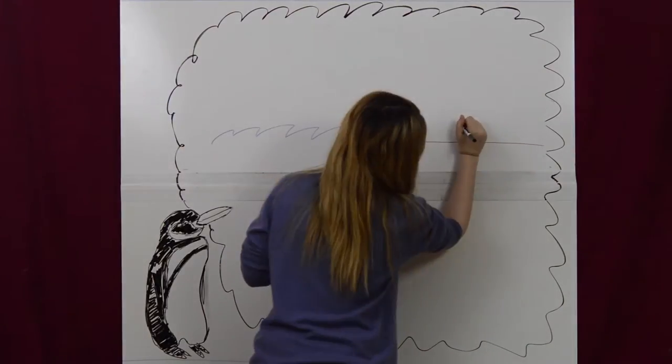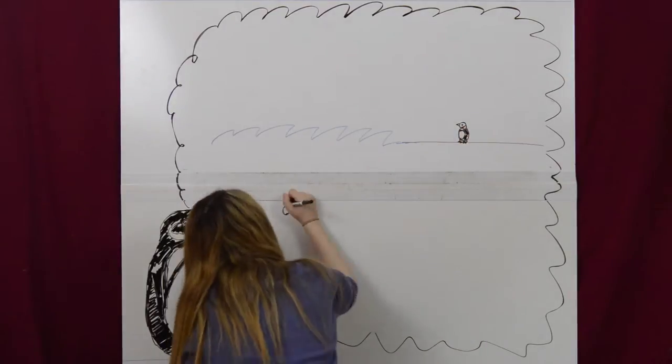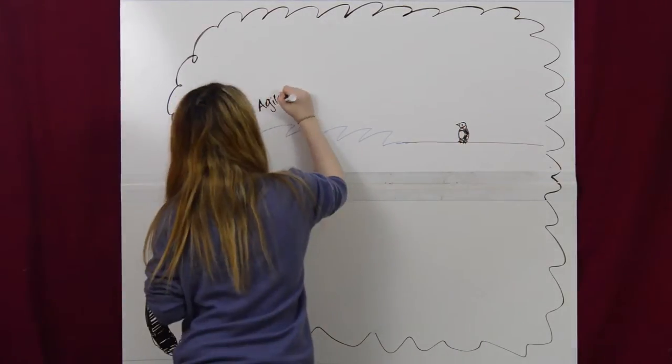Galapagos penguins are awkward walkers as a result of their short legs and small wings that provide very little balance. Although they have some trouble on land, they are agile swimmers.